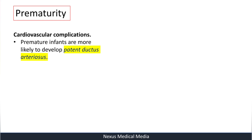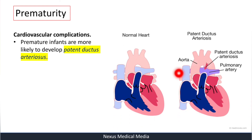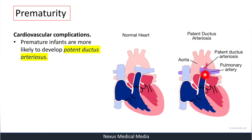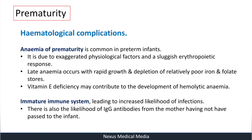Cardiovascular complications: premature infants are more likely to develop patent ductus arteriosus. During intrauterine life the lungs are non-functional, so blood bypasses the pulmonary artery via the ductus arteriosus into the aorta. If this vessel remains open after birth, that is patent ductus arteriosus.